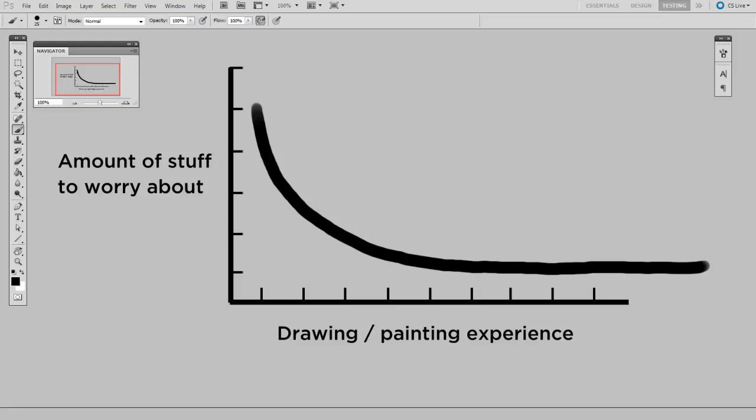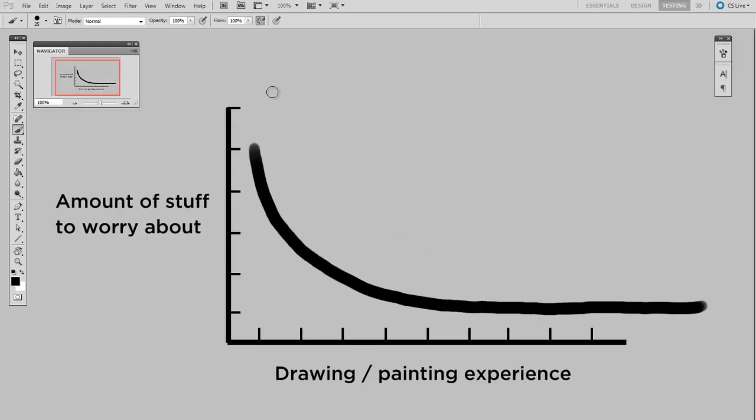So the foundation bits you need here, those mechanical things, are perspective, composition, anatomy, basic rendering, color theory, etc. You have to do these things. But to add to it, you want to work digitally. So really, your chart might look a little bit more like this.